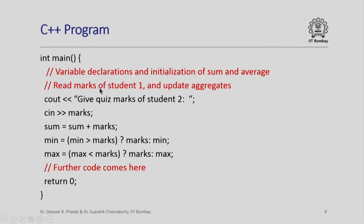After processing the first student, we do this for the second student — ask for the quiz marks, read them in, update the running sum accumulating all students' marks, and then for min and max we use conditional expressions to update their values. If the current value of min is greater than the second student's marks, we set min to marks; otherwise min stays unchanged. Similarly for max, if max is less than the marks just read, we update max to marks; otherwise max retains its value.